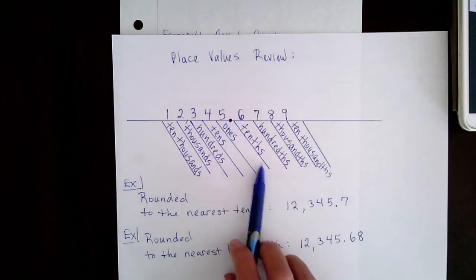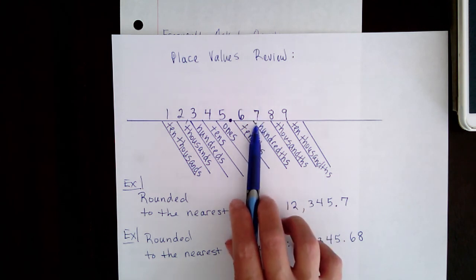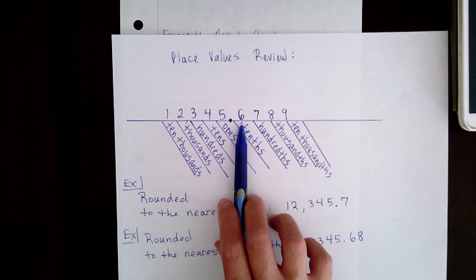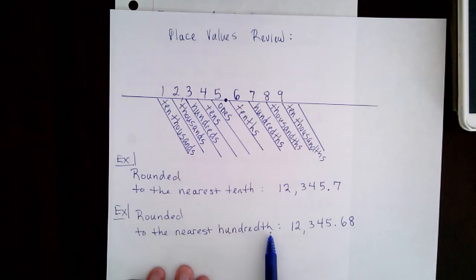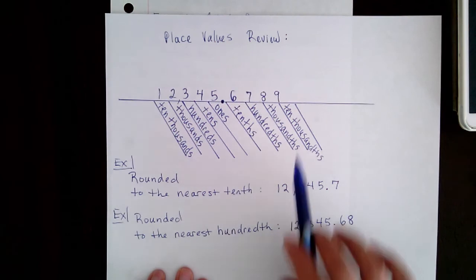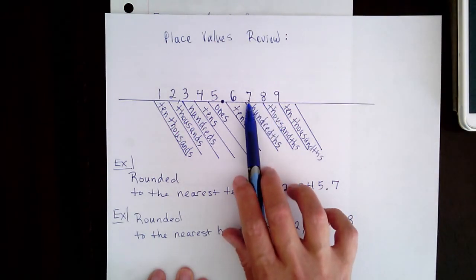If you're asked to round to the tenths place, you look to the right of the tenths place. If it's five or more, you go up to the next whole number.